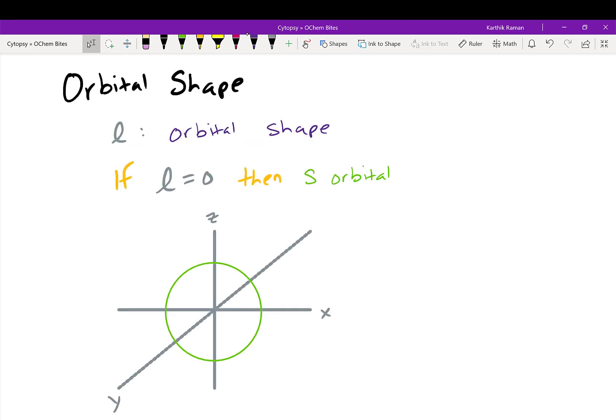All right, so now we go into the key part of this lecture, which is the orbital shape. Remember that n tells you how close the electron is to the nucleus, and L, which is equal to all the way from 0 to n-1, will tell you the orbital shape. So if L equals 0, we actually give that a special name, that's called the S orbital, and it looks like this.